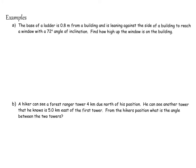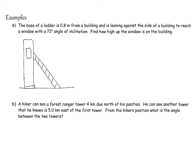Let's take a look at some questions. The base of a ladder is 0.8 meters from a building, and it is leaning against the side of the building to reach a window with a 72-degree angle of inclination. Find how high up the window is on the building. Our first step is to draw a diagram — here's our building, the ground, a window, and a ladder leaning up to the window. The base of the ladder is 0.8 meters from the building, this is a right angle triangle, the angle of inclination is 72 degrees, and we want to find this length, which we'll call x.